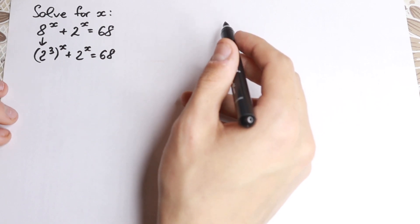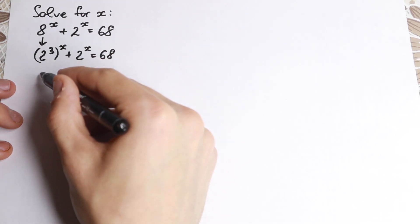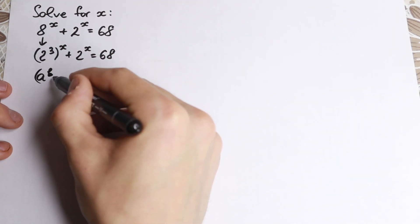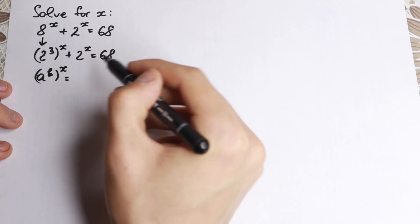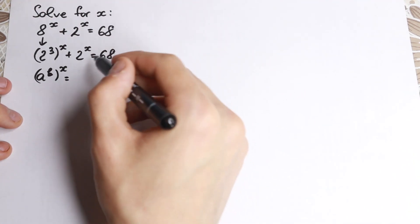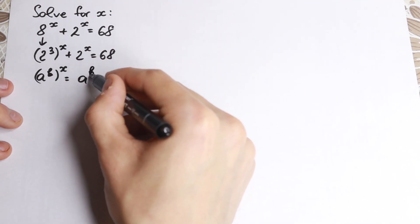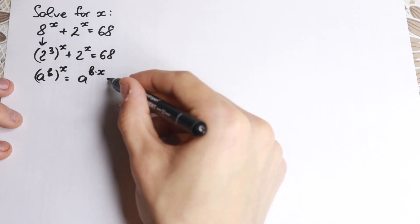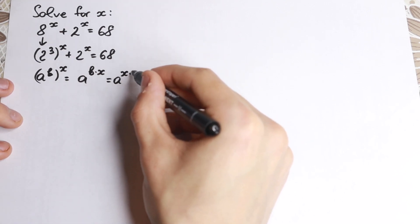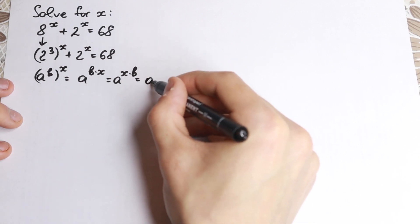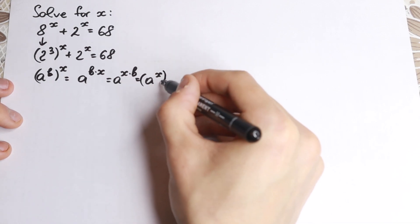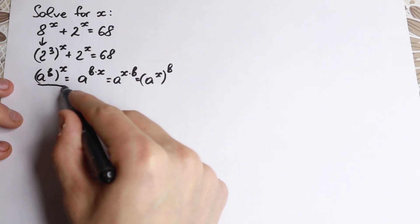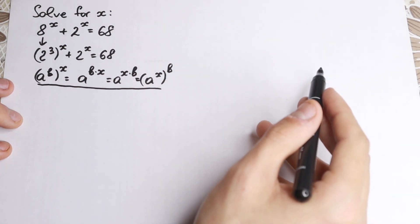Right now we need to know a really good rule — the rule of interchange. If we have a to the power b raised to the power x, we all know that we can easily write it as a to the power b times x. And I want to prove another rule: we can write it as a to the power x times b, and moreover as a to the power x raised to the power b. This is a really interesting and important rule, so just learn or remember it.